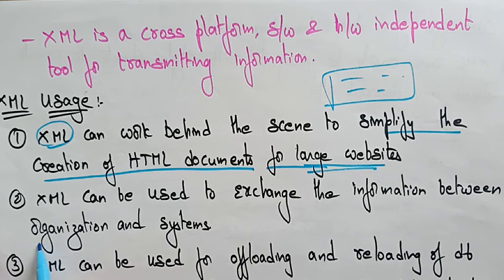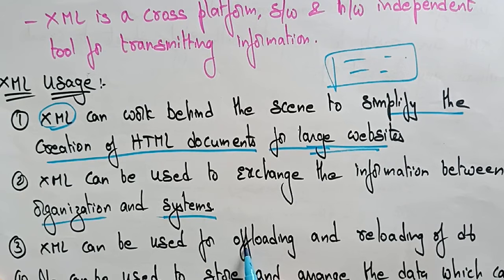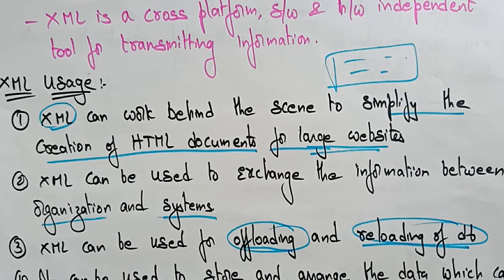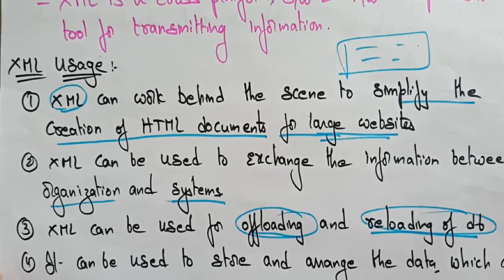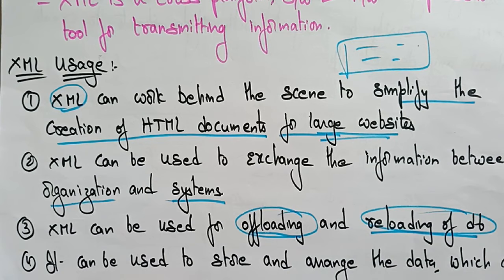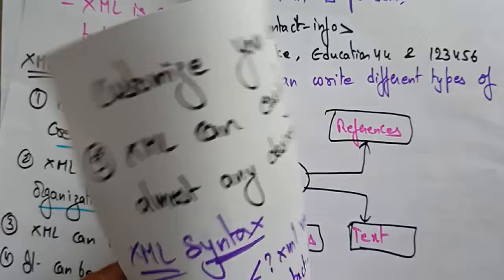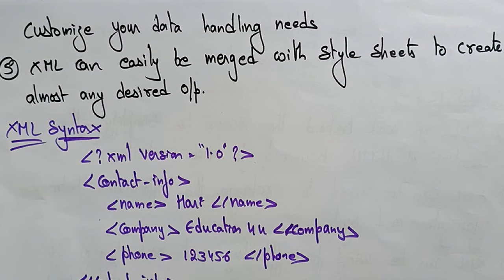XML can be used to exchange information between organizations and systems. XML can also be used for offloading and reloading of databases. Another usage of XML is that it is used to store and arrange the data, which customizes your data handling needs.